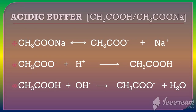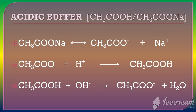For the mixture buffer, the first classification is the acidic buffer. An acidic buffer is a mixture of a weak acid and the salt of that weak acid with a strong base. For example, the weak acid is acetic acid (CH3COOH), and the salt taken is sodium acetate (CH3COONa), which is formed from acetic acid and NaOH. Because sodium acetate is a salt, it completely dissociates into acetate ions and sodium ions.